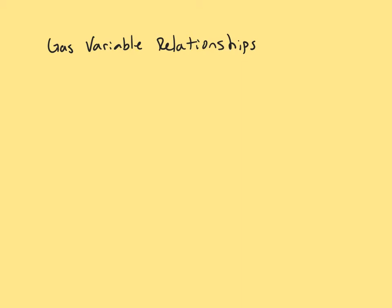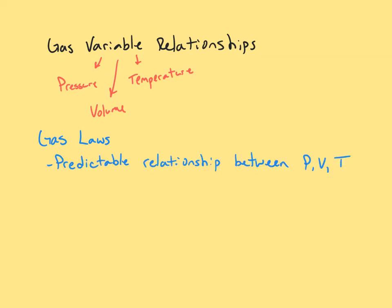In this video lesson we're going to talk about the relationships between the gas variables that we learned about in a previous video lesson. Those gas variables, once again, are pressure, volume, temperature, and number of particles. These gas variable relationships are described using something called gas laws. A gas law is defined as a predictable relationship between pressure, volume, and temperature. We're going to take a close look at pairs of these three gas variables, kind of looking at them two at a time.